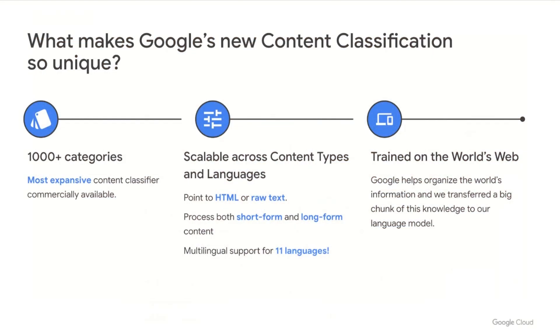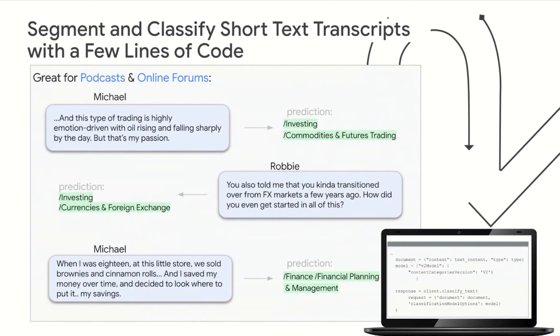What makes Google's new content classification so unique? First, it's incredibly expansive, now supporting over 100 different categories. Second, it's highly scalable across content types and languages — you can point to HTML or raw text, process short-form and long-form content, and there's multilingual support for 11 languages. Finally, it's trained on a massive amount of web data at Google scale. As an example, you can segment and classify short text transcriptions with just a few lines of code, especially useful for podcasts or online forums. You could take a transcribed financial podcast and delineate between investing in commodities and futures versus investing in currencies.